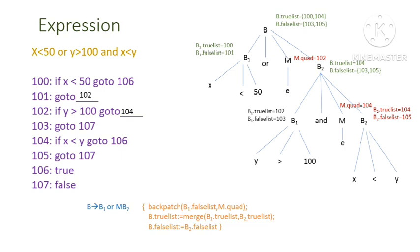You have to evaluate backpatching from the transformation rules and from the given expression to identify the missing labels. Thanks for watching. Have a good day.